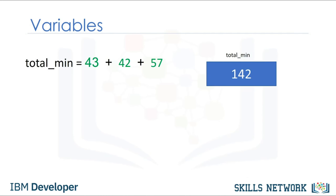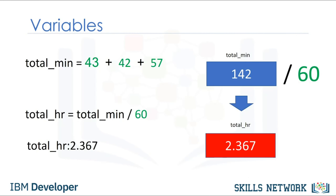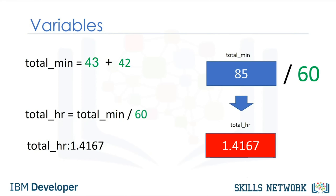We call the variable that contains the total number of minutes total_min. It's common to use the underscore to represent the start of a new word. We call the variable that contains the total number of hours total_hour. We can obtain the total number of hours by dividing total_min by 60. The result is approximately 2.367 hours. If we modify the value of the first variable, the final result values change accordingly, but we do not have to modify the rest of the code.